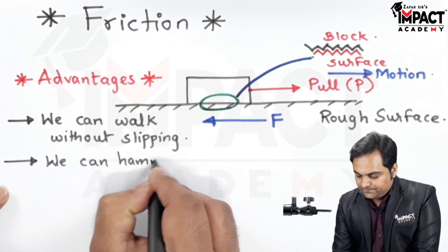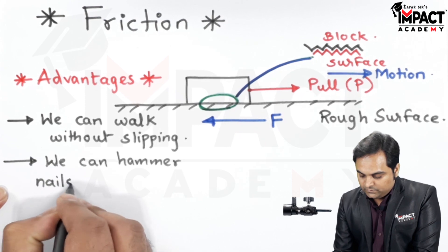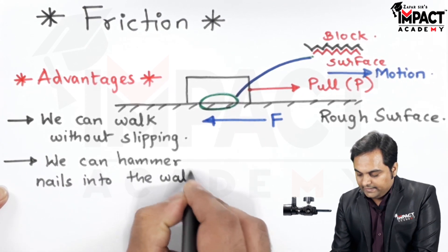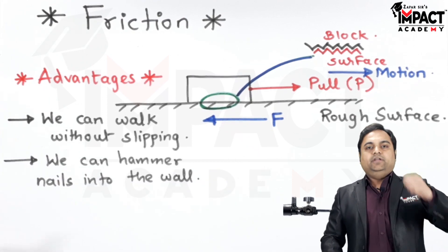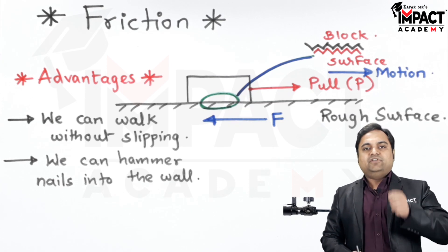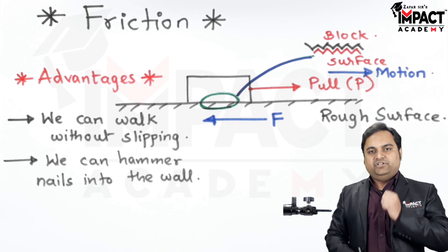The first advantage is we can walk without slipping. The next advantage is due to this interlocking we can hammer nails into the wall or any surface. In order to hammer the nail with the help of a hammer we have to have friction. If friction is not there then we cannot hammer the nail into the wall.